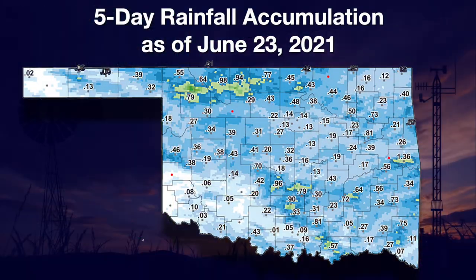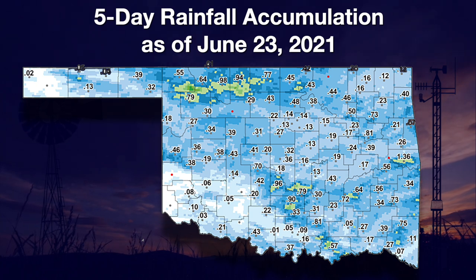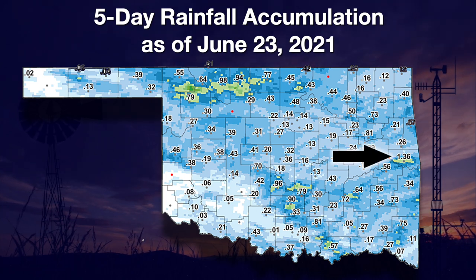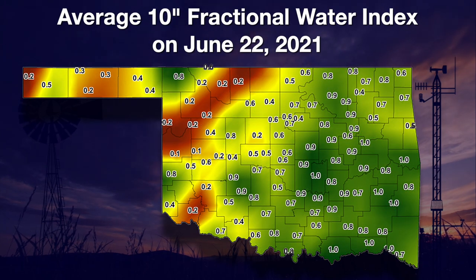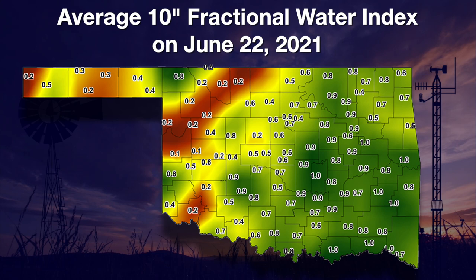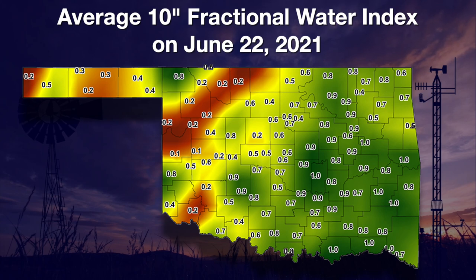Wes Lee here with the weekly Mesonet Weather Report. Any time we can get rain in the summer months, it is a welcome sight. This five-day map from Wednesday shows that as a strong summertime cold front moved through the state, it created a widespread rainfall event. The northwest tier of counties received a very beneficial rain of near one inch, as did sections of central Oklahoma. Salisaw had the highest amount with 1.36 inches. This rain helped out with soil moisture in a few western counties, but we still have quite a bit of moisture-depleted soils. The commonly summertime dry areas of the southwest, northwest, and panhandle show up as red on this 10-inch fractional water index map.